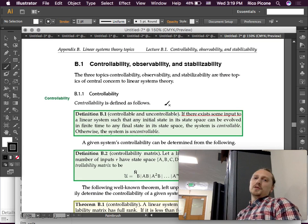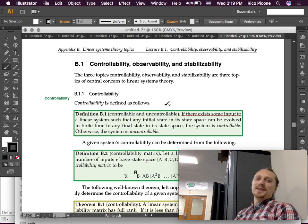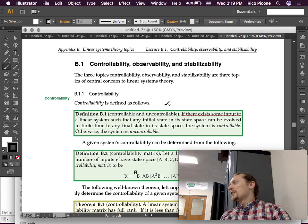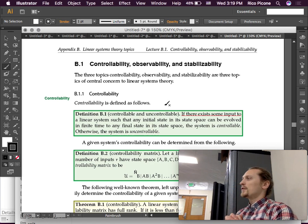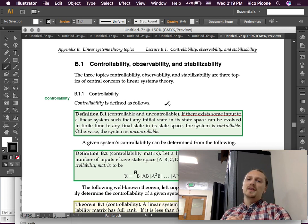The three topics, controllability, observability, and stabilizability, are three topics of central concern to linear systems theory, okay? So, we are just going to scratch the surface, but it's going to be worth having this discussion. So, controllability is defined as follows.